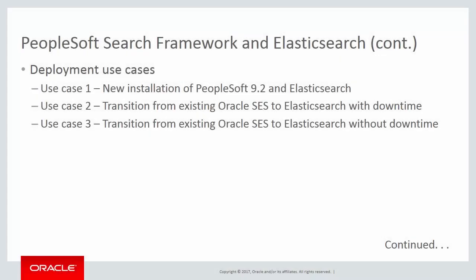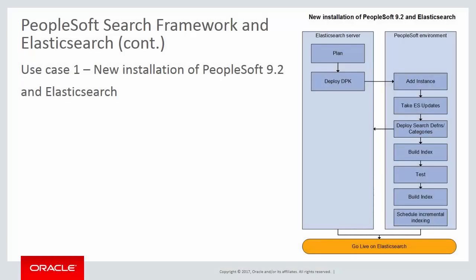Here are some typical deployment scenarios based on your business requirements. Use Case 1 is a new installation of PeopleSoft 9.2 and Elasticsearch — also applicable to users still using Verity or who didn't deploy SES. This use case assumes you are installing a PeopleSoft 9.2 application and can start using Elasticsearch directly. The PeopleSoft application must include the appropriate fixes for Elasticsearch as delivered with the latest PeopleSoft update image.